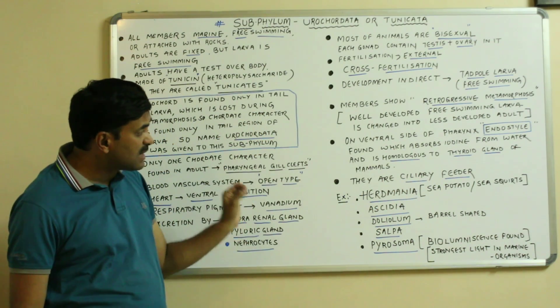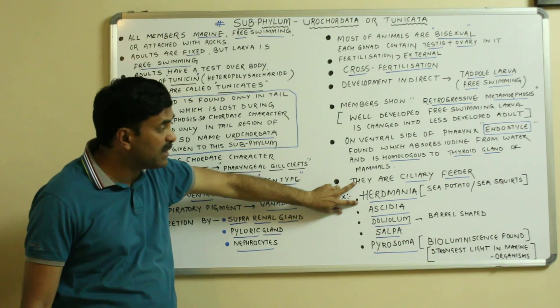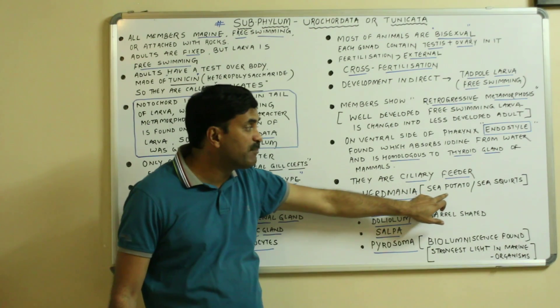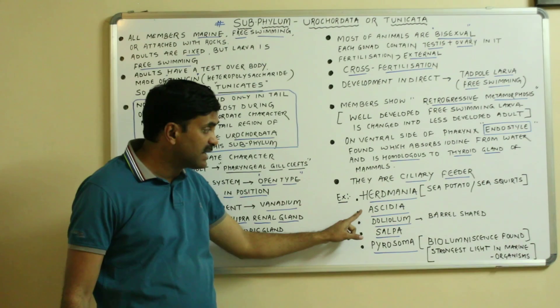The best examples of these urochordates are Herdmania. It is very common example. It is called as the sea potato. It is also called as the sea squirt. Ascidia, that is known as the Ascidia.